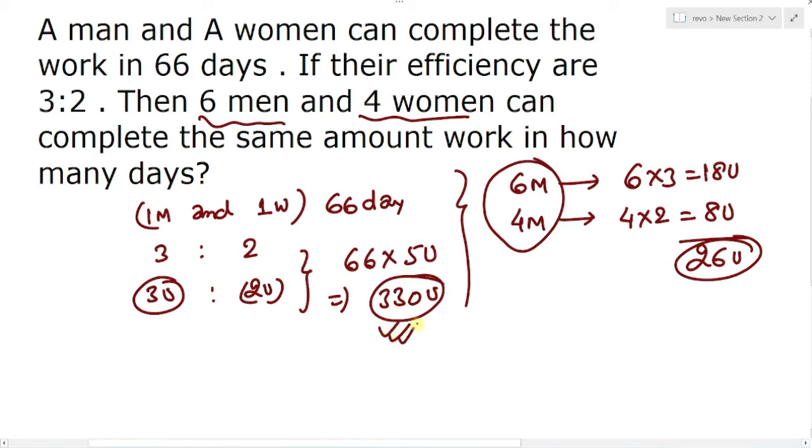Total work done about 330 units. So what will be the time required? Simply 330 units divided by 26 units per day, correct.